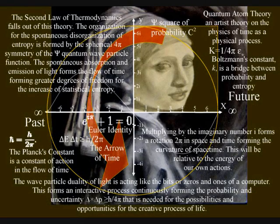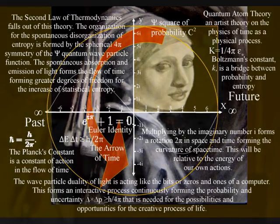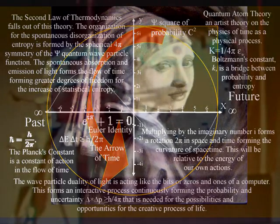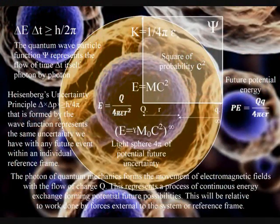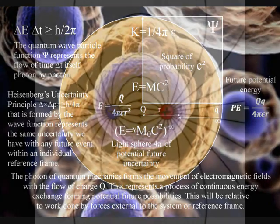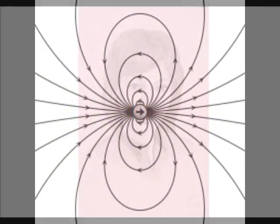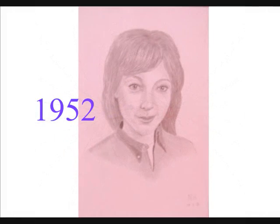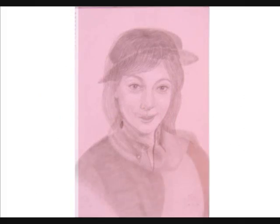At the most fundamental level, this is a process of symmetry forming and breaking that forms the entropy or the disorganization of everyday life. It also forms the potential for ever greater symmetry formation that we see in the diversity of cell life. The main effect this process of energy exchange has on us is the aging process, with everything continuously changing.